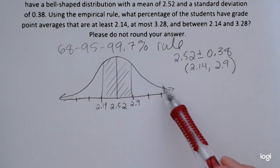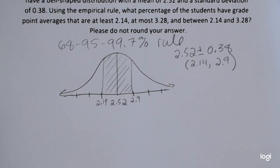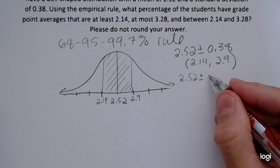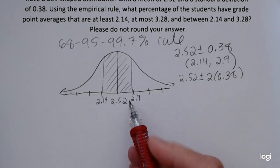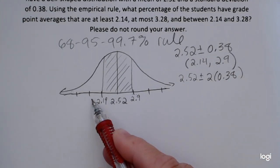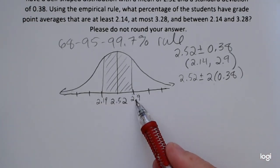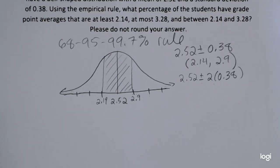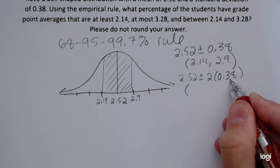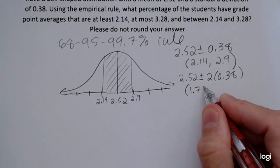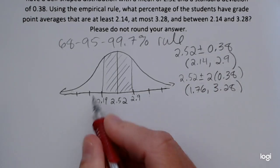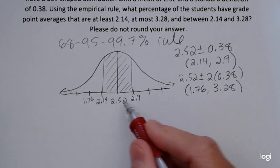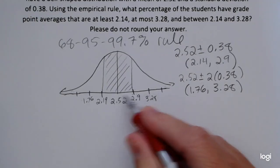To go out one more standard deviation, I add and subtract 2 times 0.38, going two standard deviations above and below the mean. You could also just take 2.90 and add another 0.38, since the tick marks are in increments of one standard deviation. Adding and subtracting two standard deviations gives an interval from 1.76 up to 3.28.